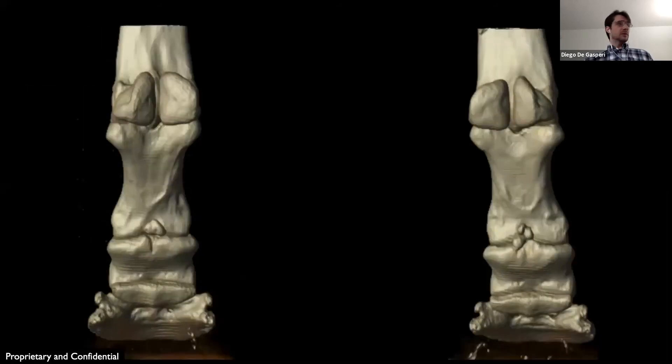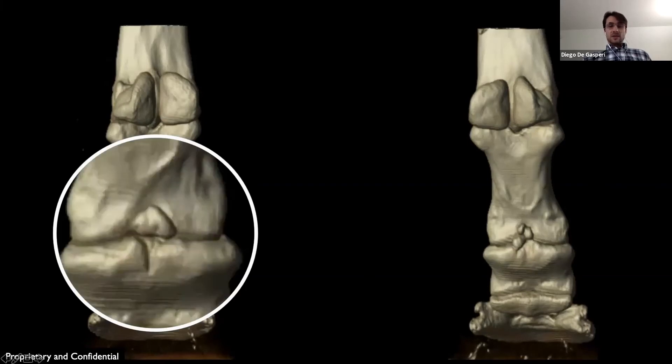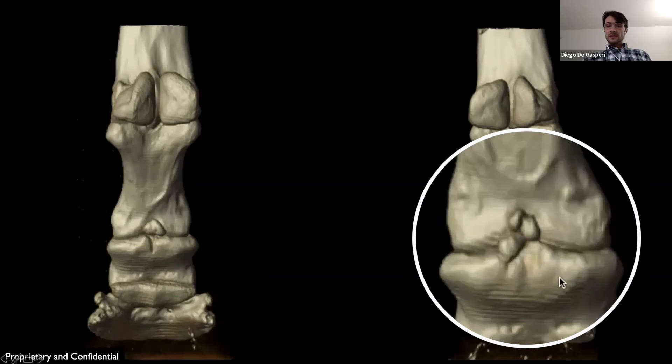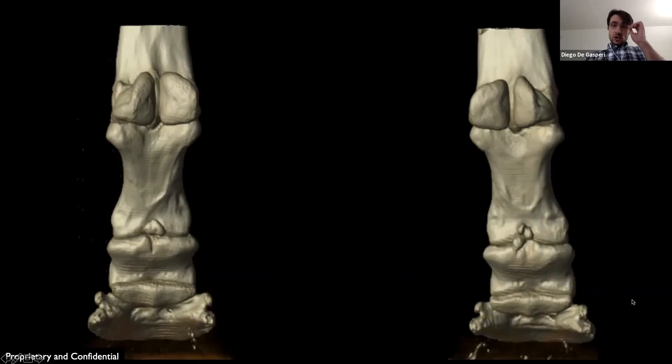This is the 2D reconstruction of both front distal limbs, and you see there's a large fragment on the left and multiple fragments on the right. The decision was made to surgically address the lesion in the right forelimb, since there was no lameness associated with the left forelimb.